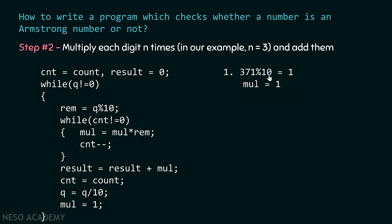Let's trace the code with 371. We divide 371 by 10; the remainder is 1, stored in the remainder variable. cnt equals 3, which is not zero, so we enter the inner loop. mul starts at 1; we multiply 1 by 1 three times, so mul stays 1 after three iterations. We add mul (1) to result (initially 0), so result becomes 1. Then we divide q (371) by 10, and q becomes 37.